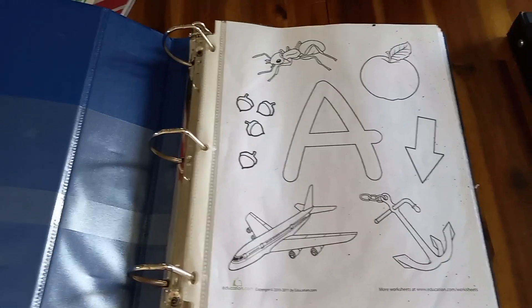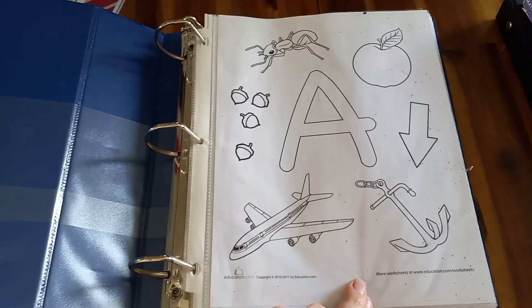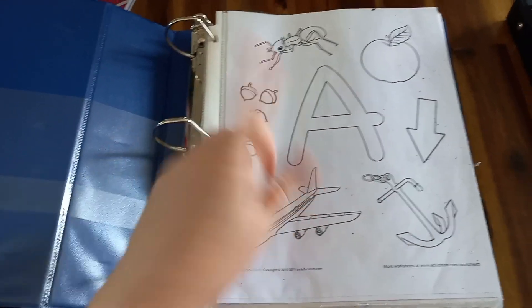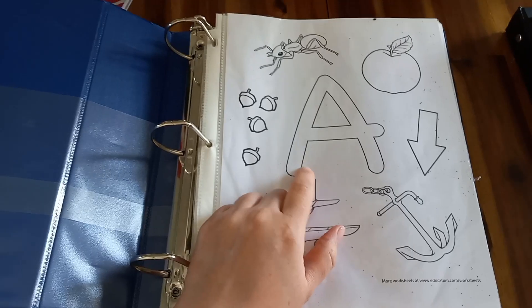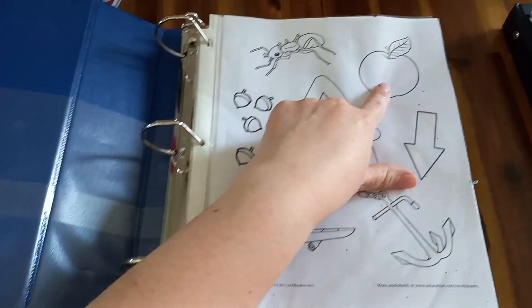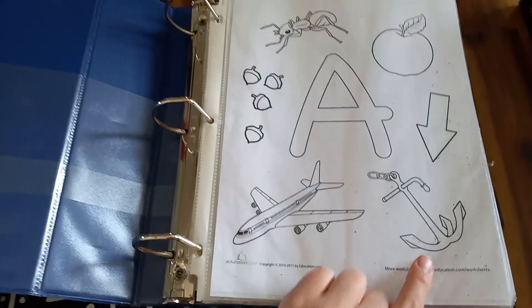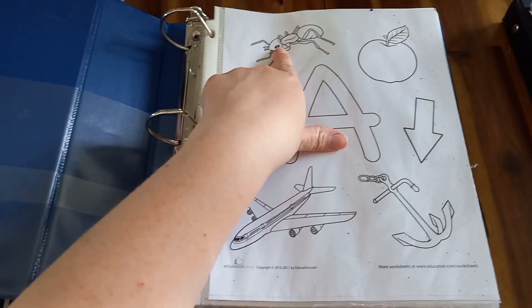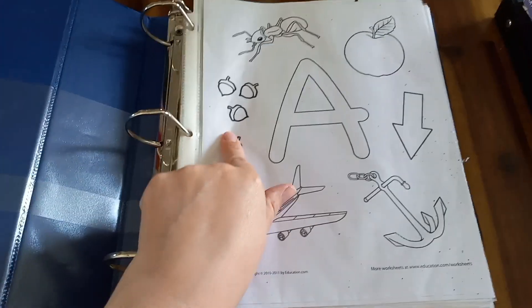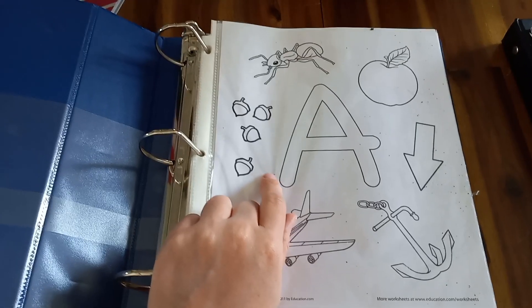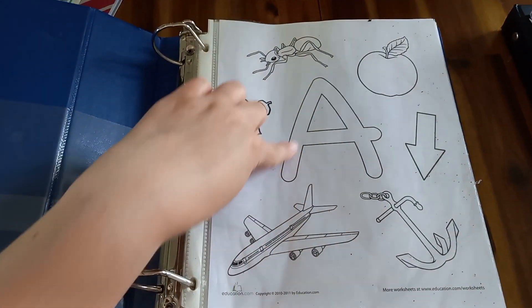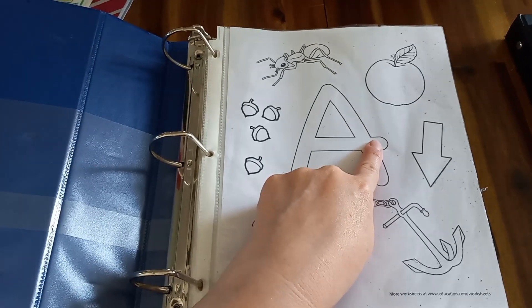For every letter, I have a sheet here. We go over the letter. So I'll give you an example. A for ant, apple, arrow, anchor, airplane, and acorn. And then I have them color the little pictures. And then we use the manipulatives that I have and they fill in the letter with the manipulatives.